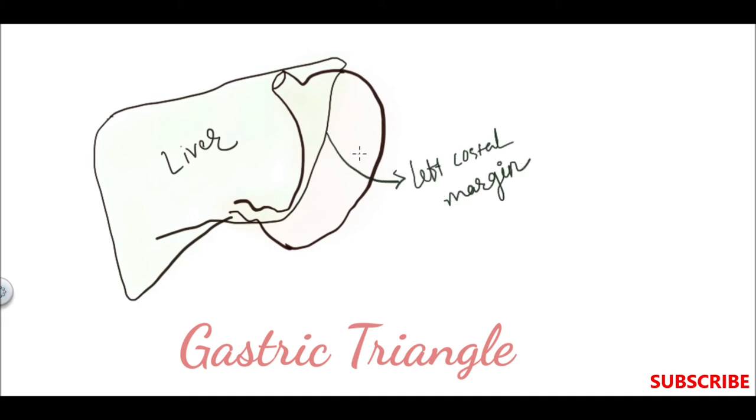This one is the left costal margin by the 7th to 10th ribs, and below it is bounded by the transverse colon.